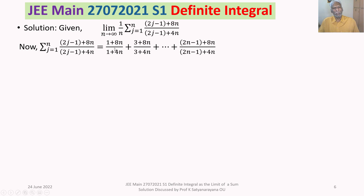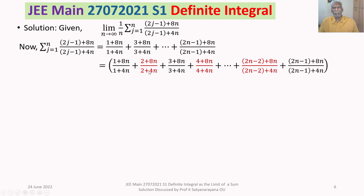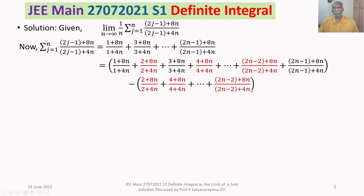Note the intermediate terms such as (2 + 8n)/(2 + 4n), (4 + 8n)/(4 + 4n), and (2n − 2 + 8n)/(2n − 2 + 4n). We add all of these in and then subtract them to balance. The added terms are shown in red and the original terms in black, so we introduce the red terms and then subtract them.